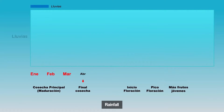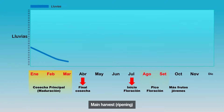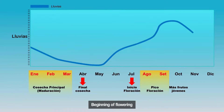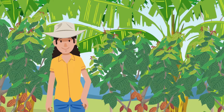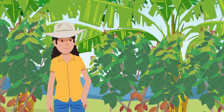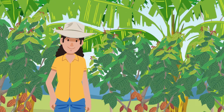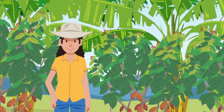Knowing these aspects of the diseases, we will give an example of how to carry out integrated management, starting from the beginning of a new annual production cycle. When the main harvest season ends, we can consider that a new production cycle will begin.